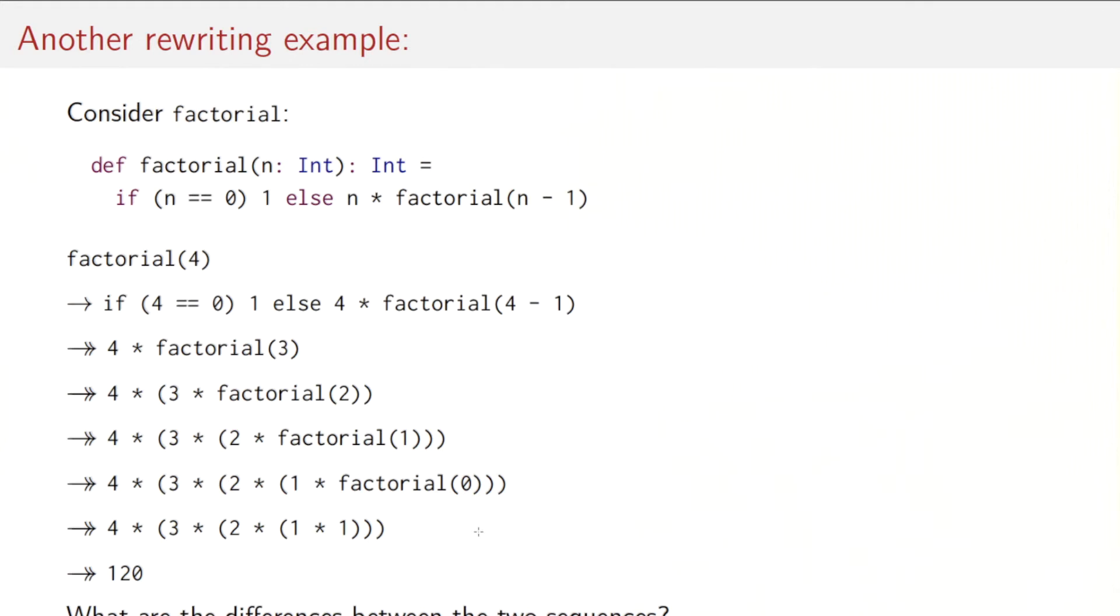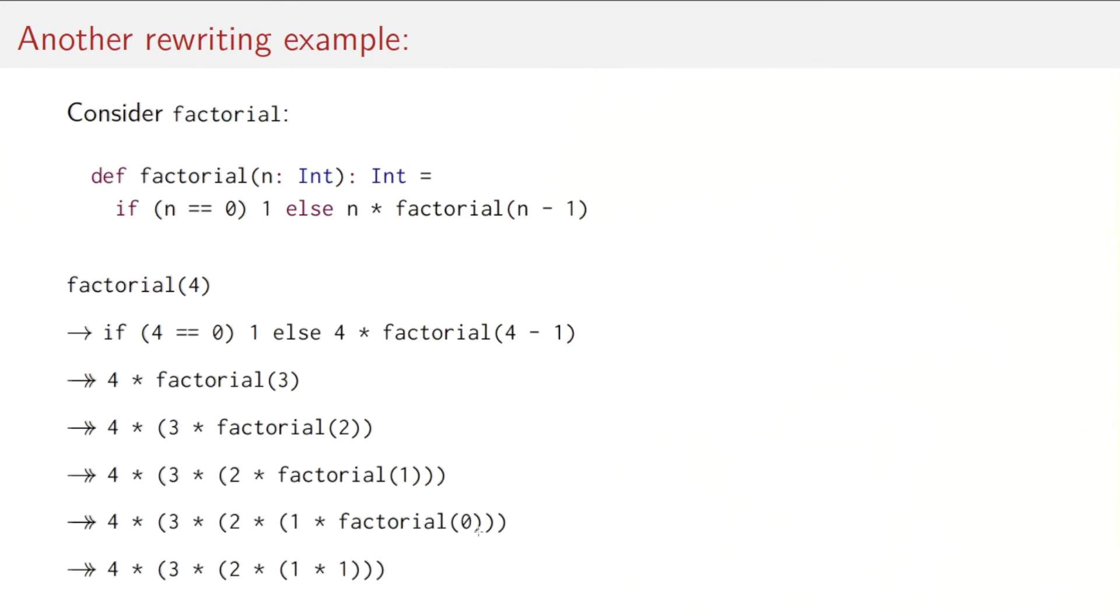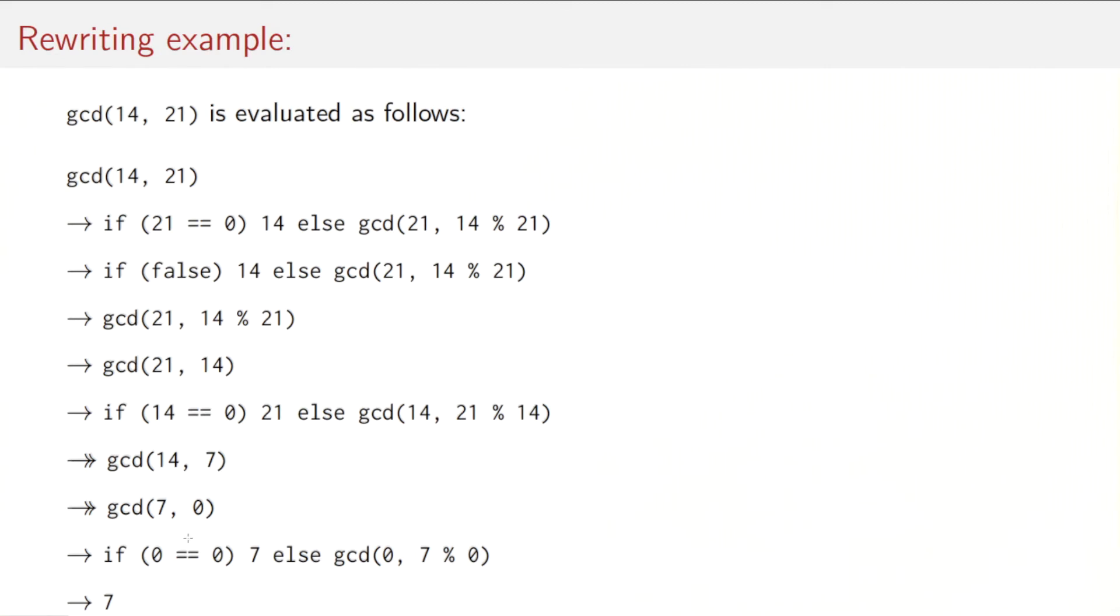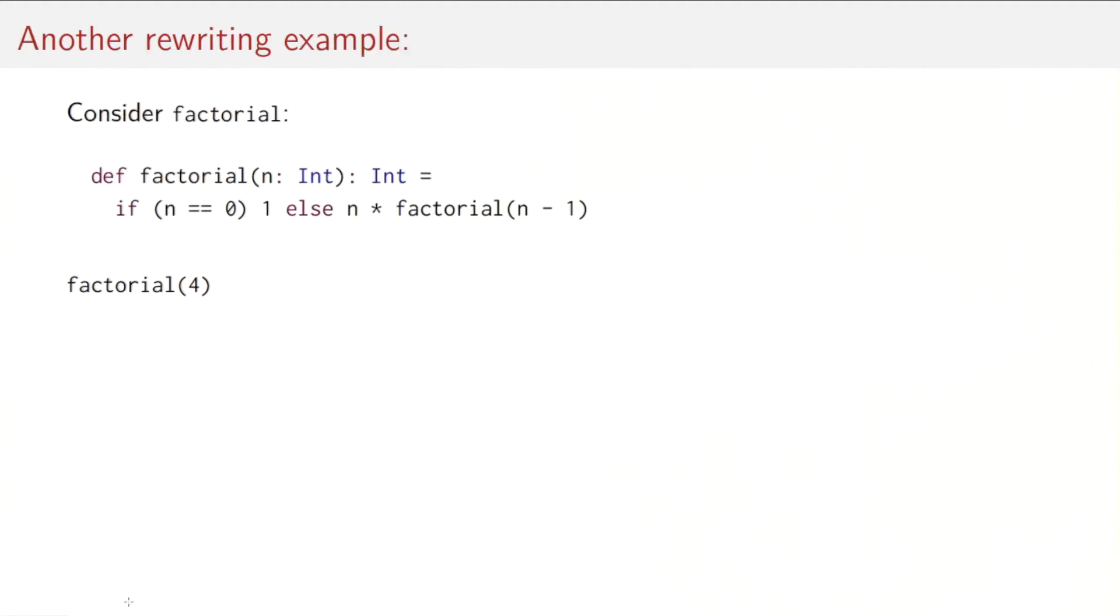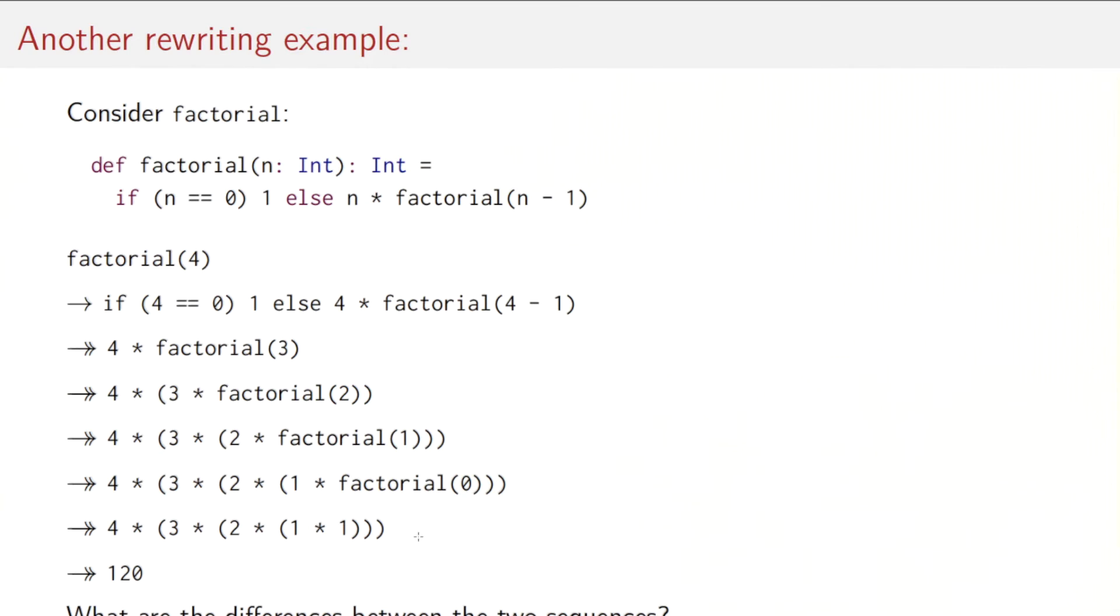Question. What is the difference between these two sequences? GCD and factorial. Well, one important difference is that if we come back to GCD, we see that the reduction sequence essentially oscillates. It goes from one call to GCD, to the next one here, to the next one here, to the next one here, and finally, it terminates. In between, we have expressions that are different from a simple call, like the if-then-elses, but we always come back to this shape of the call of GCD.